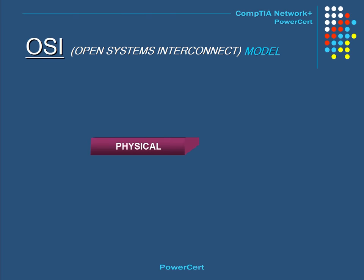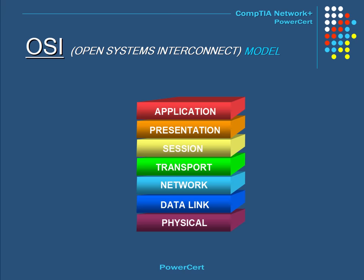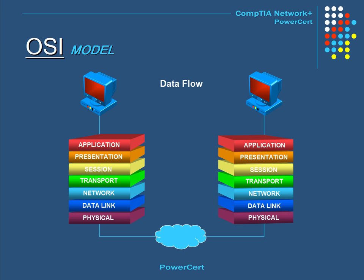In order for network communication to take place, there needs to be a set of standards — that's why the OSI model was developed. The OSI model describes how information from software in one computer moves through a network to reach software in another computer. It does this by breaking down data communication into seven different layers, numbered from one to seven starting from the bottom: physical, data link, network, transport, session, presentation, and application. When two computers want to communicate, data flows down the OSI model, crosses over the network media, and flows back up the OSI model to its destination.